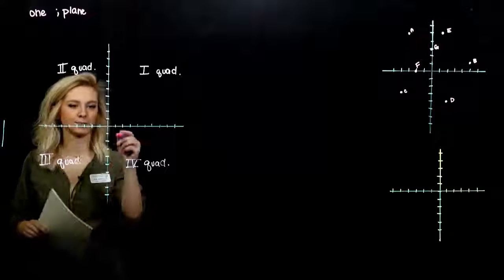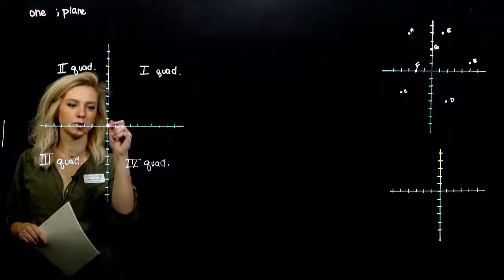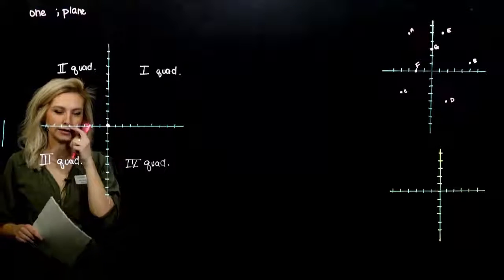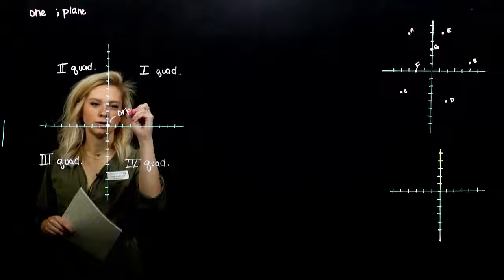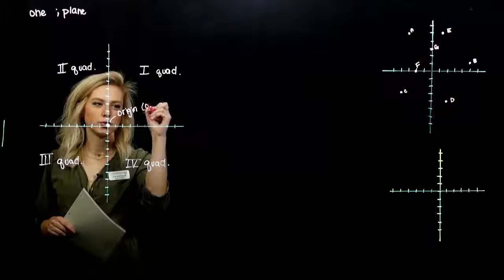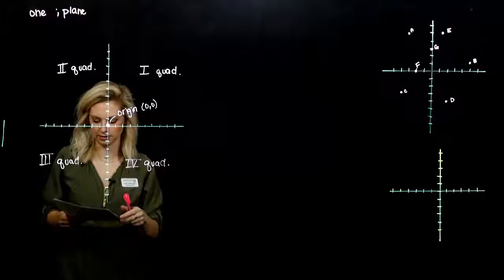The center point, where the two axes are intersecting, has a special name. It's called the origin, and that is the point zero, zero. We use those synonymously.